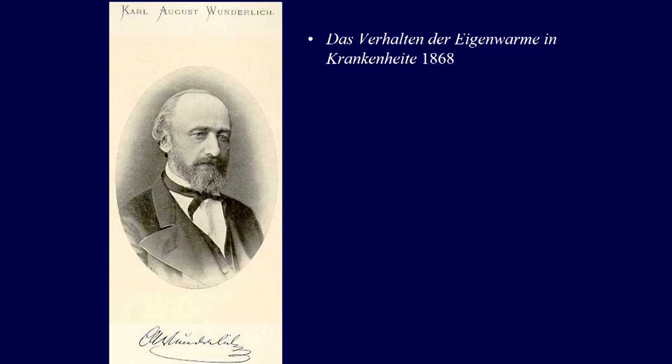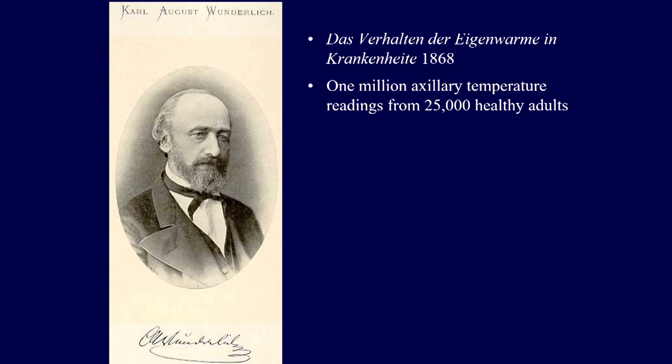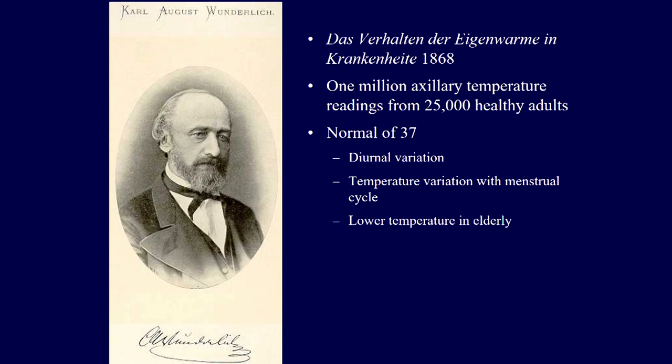We've been hypothesizing that infections play a metabolic toll, and one of the best markers of metabolism is temperature. We read Karl Wunderlich, the first person to really write about temperature in the mid-19th century — a professor at the University of Leipzig who did one million axillary temperatures on 25,000 people — and established the normal temperature of 37 degrees Celsius, 98.6 Fahrenheit. He identified that temperature is lower in the morning, varies with menstrual cycle, is slightly higher in women than men, and lower in the elderly.